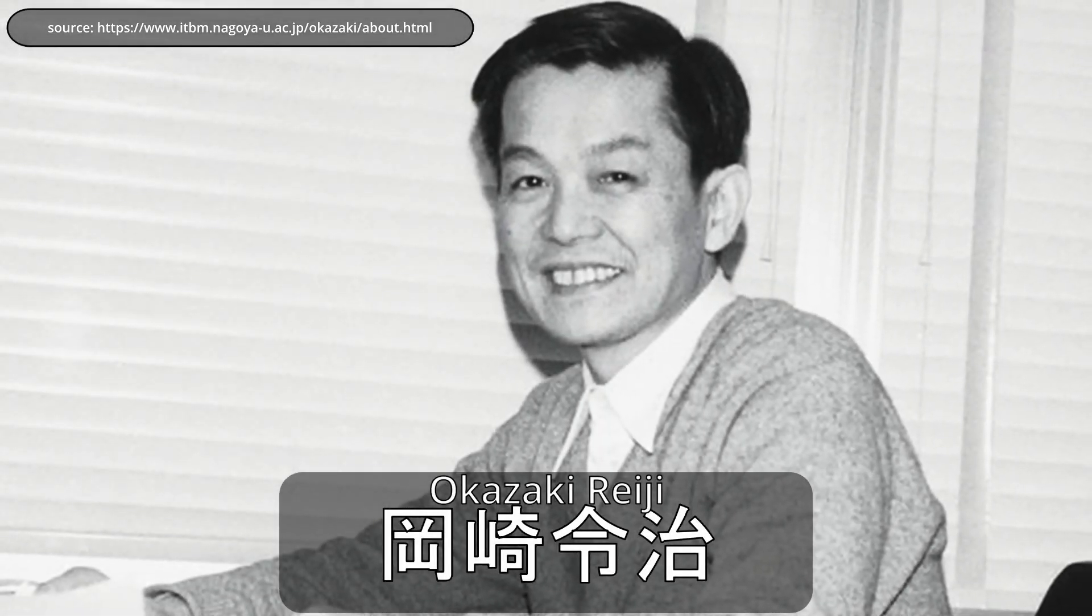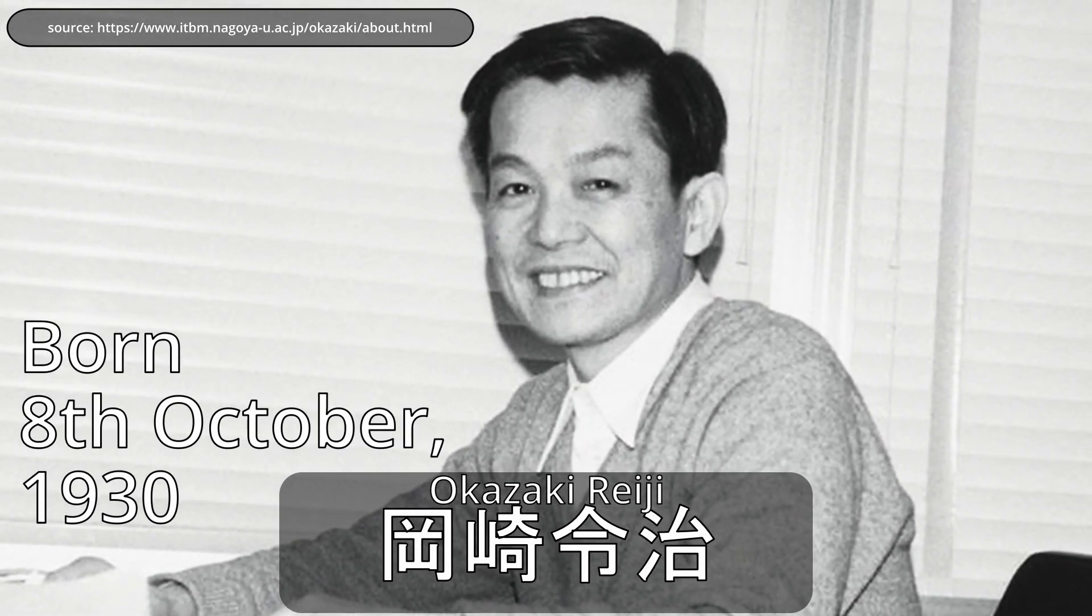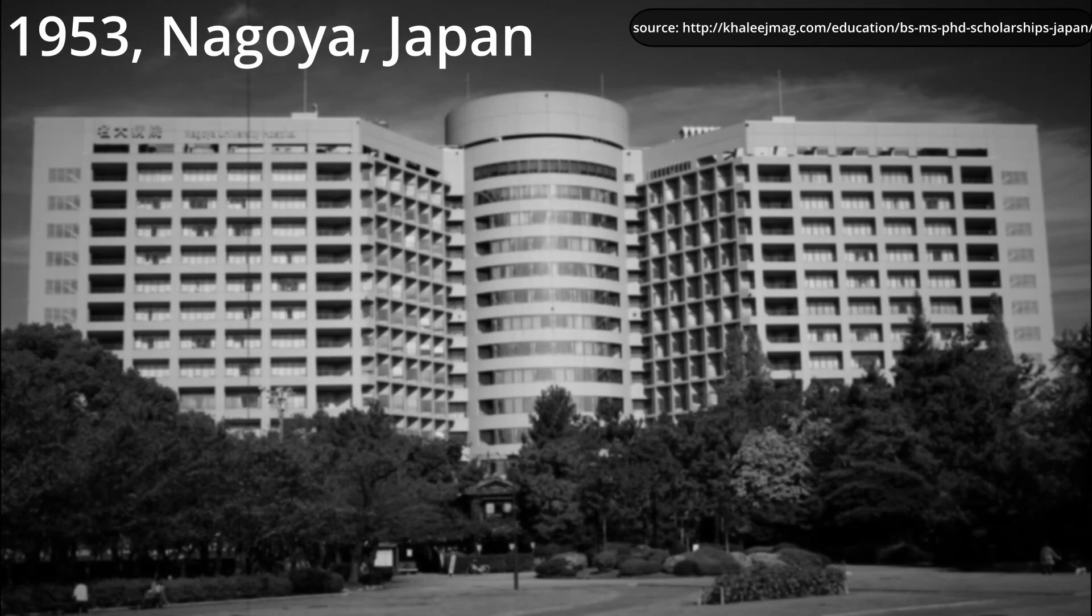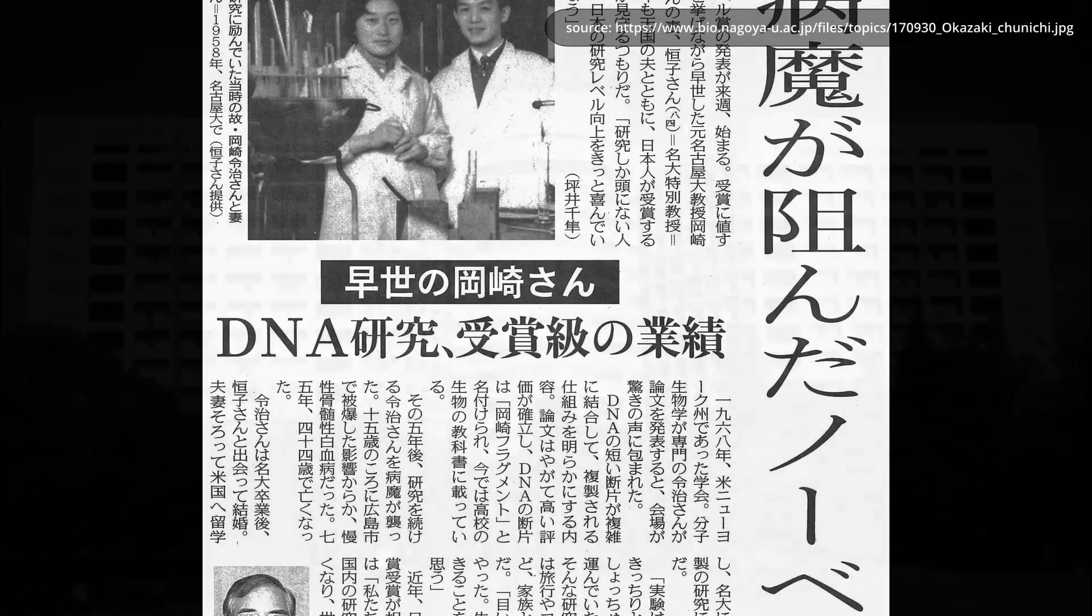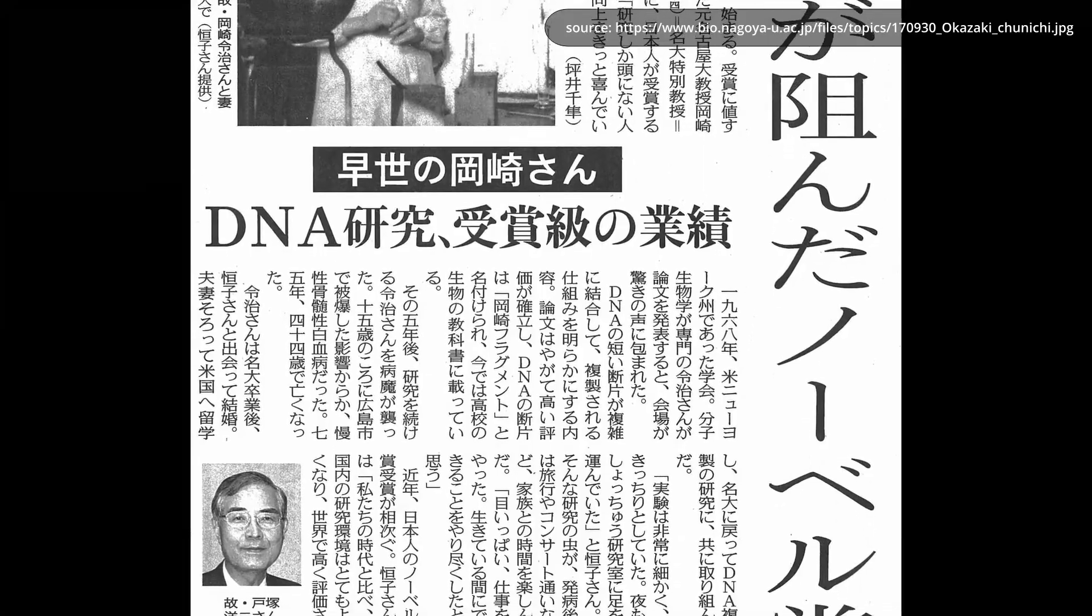Reiji Okazaki was a Japanese molecular biologist born on the 8th of October, 1930. After graduating from Nagoya University in 1953, he made groundbreaking discoveries about the way DNA is replicated in 1968.